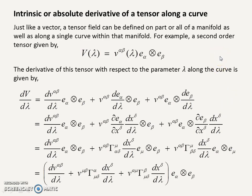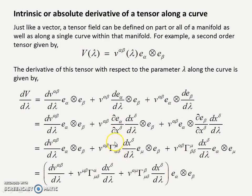Let's look at the intrinsic or absolute derivative of a tensor along a curve, because it follows the same process. The components of the tensor — a second-order tensor in this case — are parameterized in terms of lambda. These are our basis vectors as an outer product. The derivative of this tensor with respect to lambda has three terms: the components and each of the two basis vectors must each be differentiated in turn. Again, the chain rule comes to our aid. We recognize de^α/dx^δ and de^β/dx^δ as the respective connection coefficients. It only remains to factorize out the common basis e^α ⊗ e^β.